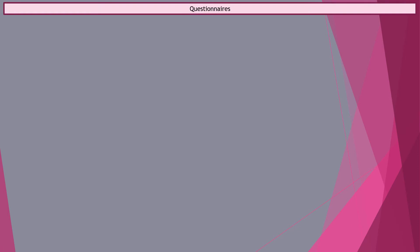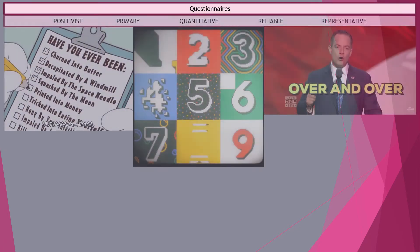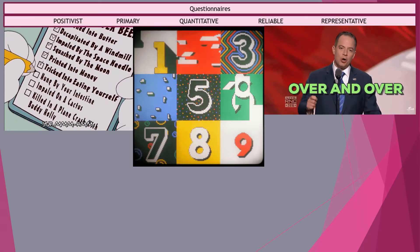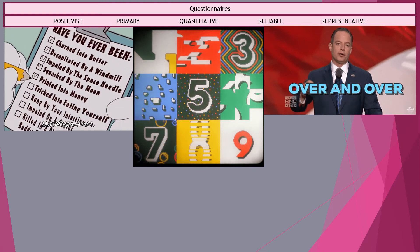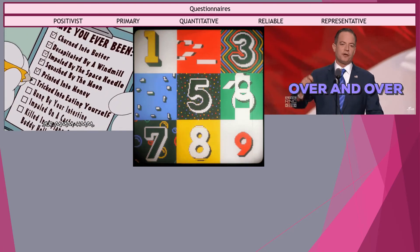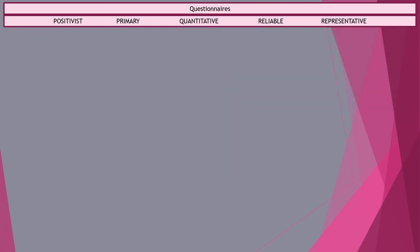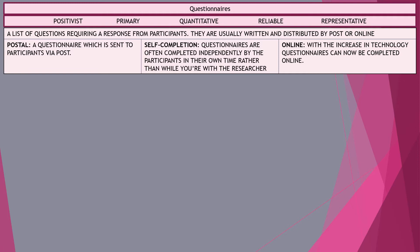Questionnaires as a research method are positivist, primarily quantitative, reliable, and representative. Essentially, a questionnaire is a list of questions given to a participant, sample, or respondent, asking them to record their answers and return them.